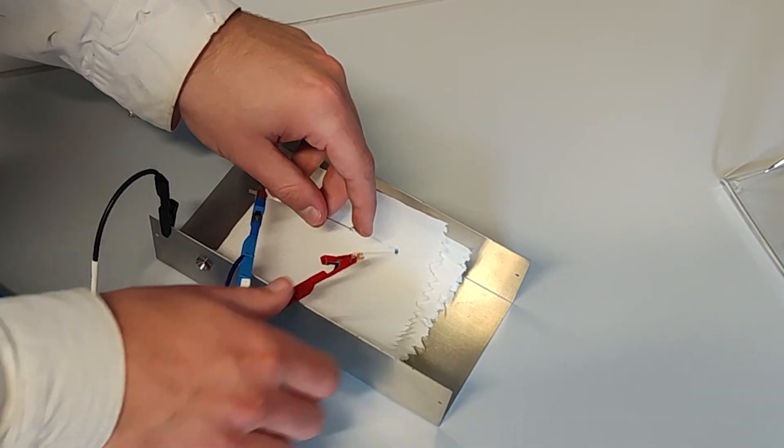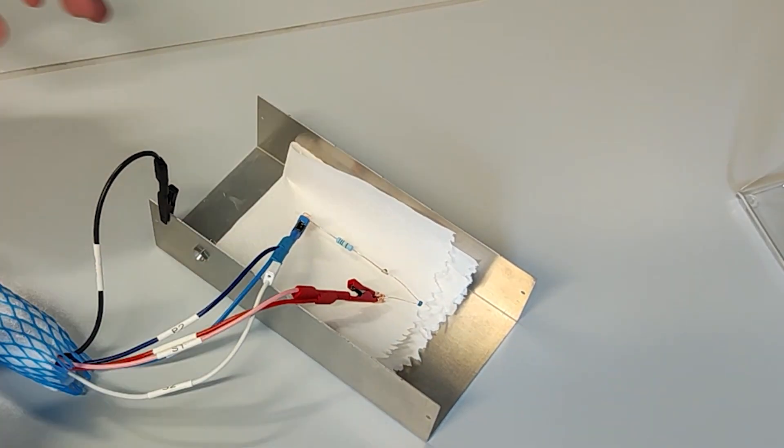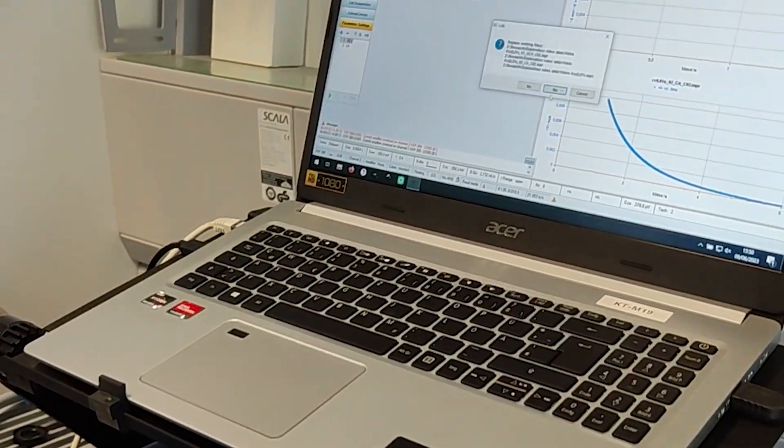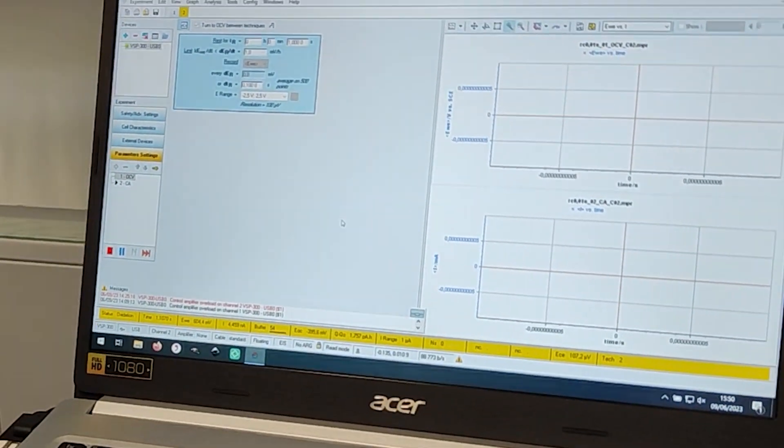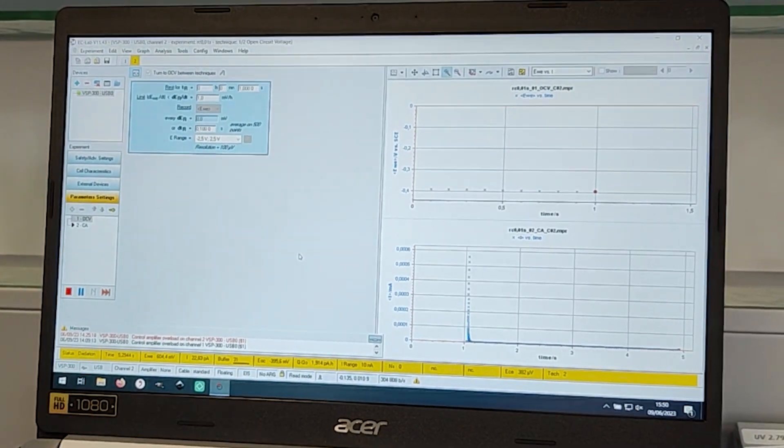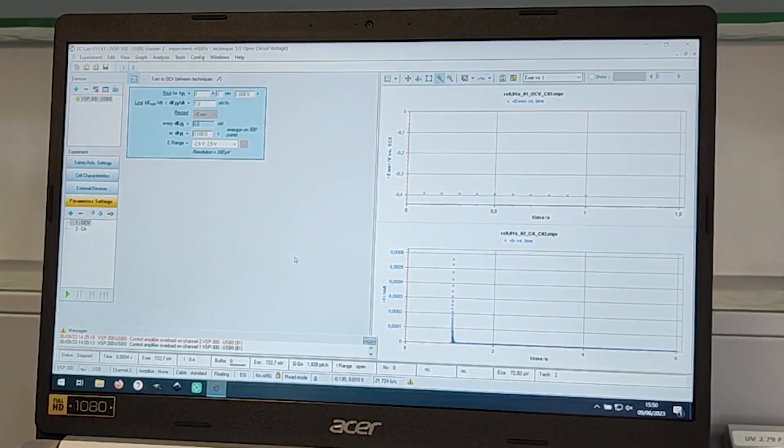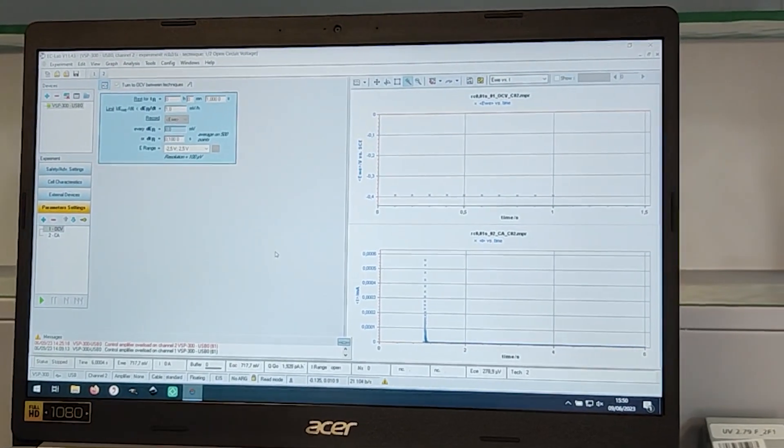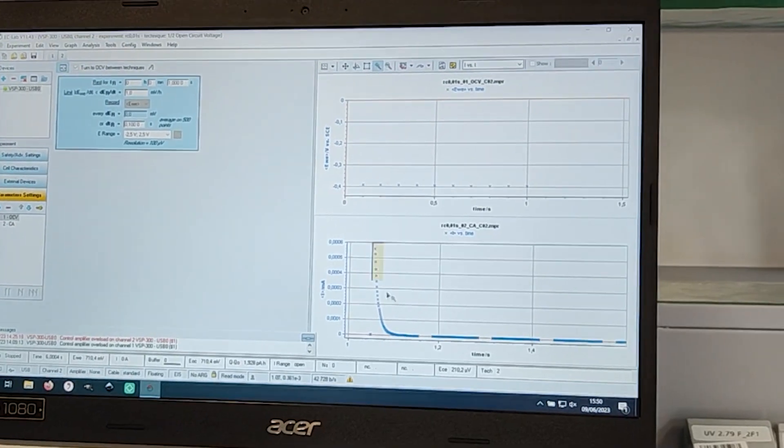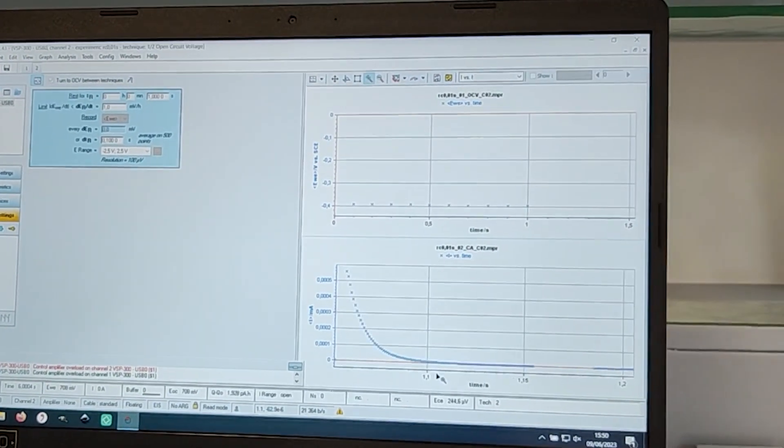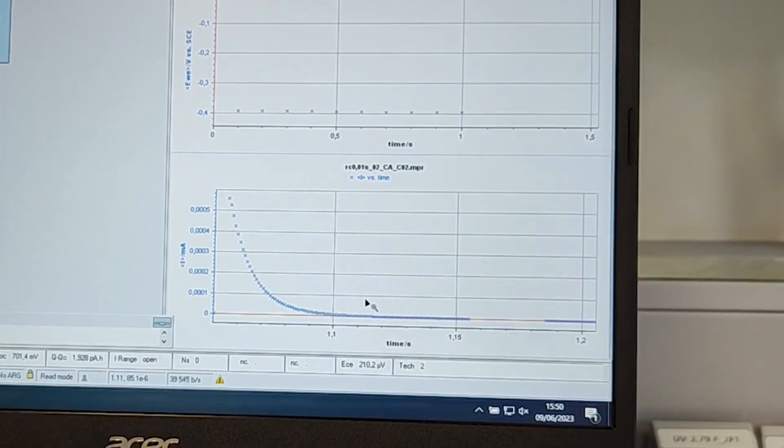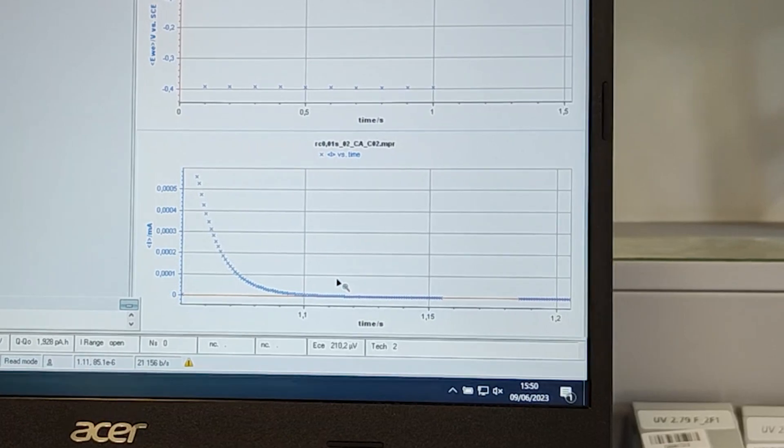and we will now apply again a one volt step. And as you see, this current response looks much more like the idealized capacitive response, although when we zoom in, we see exactly the same behavior where the current peaks at a finite value and then decays to zero over some time. Except here it's not five seconds, but only something on the order of 0.1 seconds.